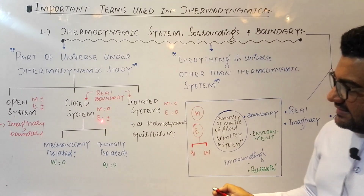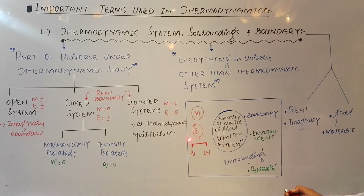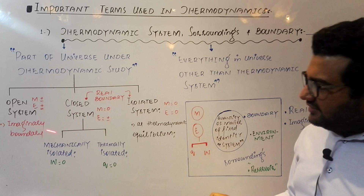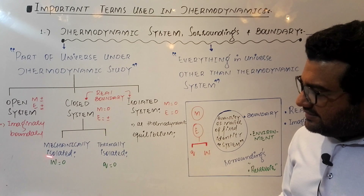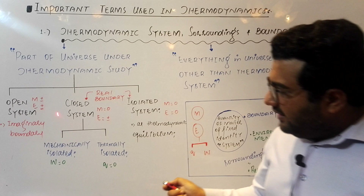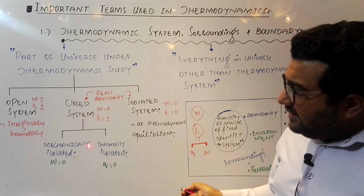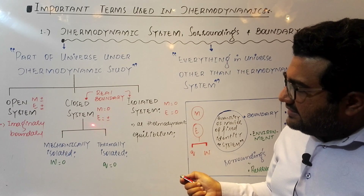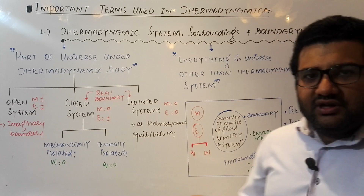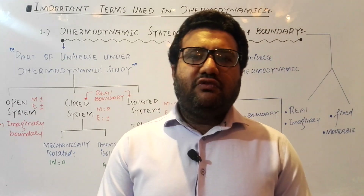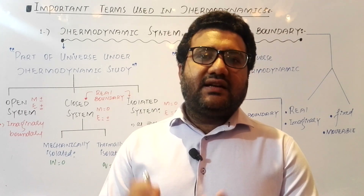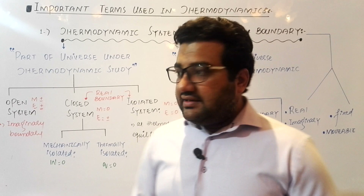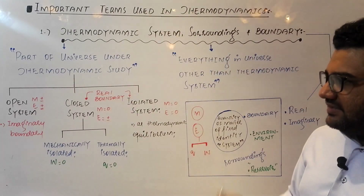Energy exchange takes place either in the form of heat Q or work W. So the closed system is further divided into two subcategories. The first is the mechanically isolated closed system, in which energy can only be exchanged in the form of heat — work done is zero. An example is a cylinder with an immovable piston: there is no work done, but energy exchange with the surroundings can take place in the form of heat.